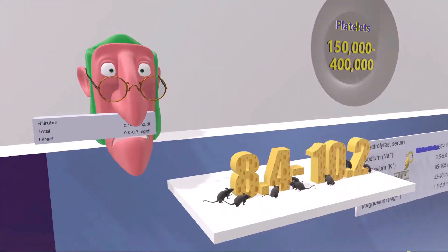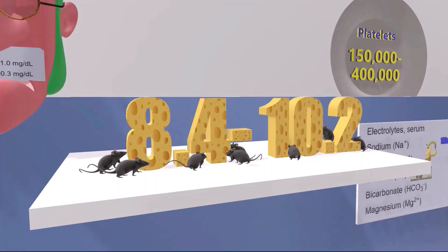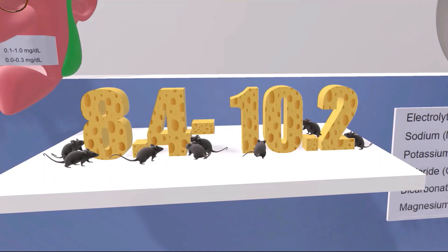Now before we get to this man over here, we notice these mice over here eating cheese. Now cheese has calcium in it, so this is going to remind us of calcium. Now how many mice are there, are there 8, 9, or 10? I'm not sure, but between 8 and 10, this reminds us that calcium levels should be between 8.4 to 10.2.